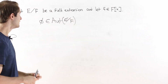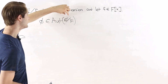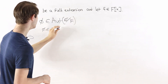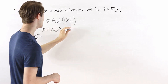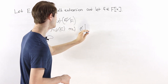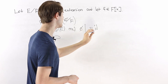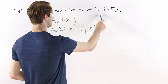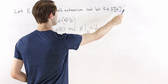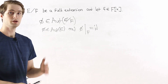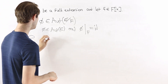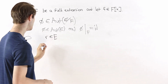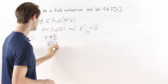What does this mean? It means we're taking an automorphism of the field E that fixes F. So phi is in the automorphism group of E, and phi restricted to the base field F is the identity function — it leaves elements of the base field F unchanged. Now we have this polynomial f in the base field polynomial ring, and we consider some element r in the extended field E and ask: what is phi of f of r?